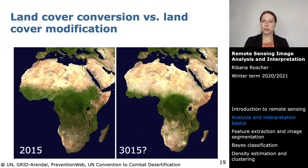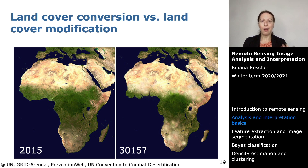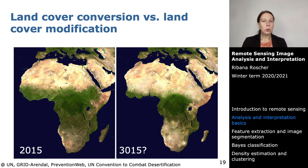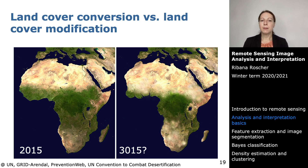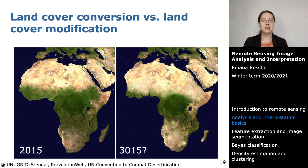Another example is a forecast of what Africa could look like in the year 3015 if current climate development continues. This change is particularly obvious when looking at Madagascar or the Strait of Gibraltar. Comparing the two images, you see many land cover conversions — areas where land converts to ocean. But looking at smaller scales with many images over time, you can also see modification within one land cover class, such as desertification.